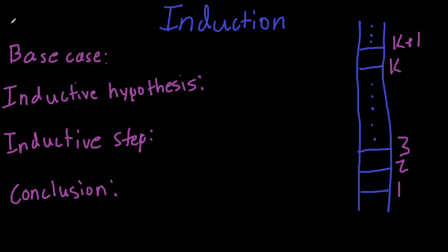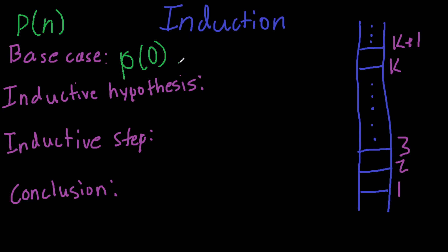There's a bit of formatting involved. You have to write the problem as a propositional or logical function — whatever problem you have revolves around the function p of n. You have what's called the base case, which is the very beginning of the domain. If you have all positive integers, some classes start at zero and some at one. Now for the inductive hypothesis, this is where k comes into play. You can't say that k works — you have to assume it's true.